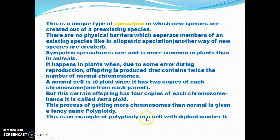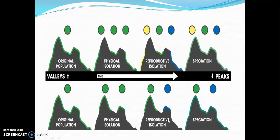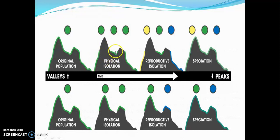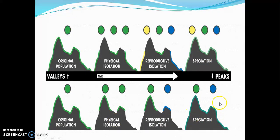This is an example of polyploidy in a cell with diploid number 6. Looking at the graph or peaks, you can see: original population, then physical isolation due to some geographical barrier, then reproductive isolation, and then speciation. The same pattern applies in both cases. Speciation is a result of physical isolation or reproductive isolation — physical isolation leads to allopatric speciation and reproductive isolation leads to sympatric speciation.